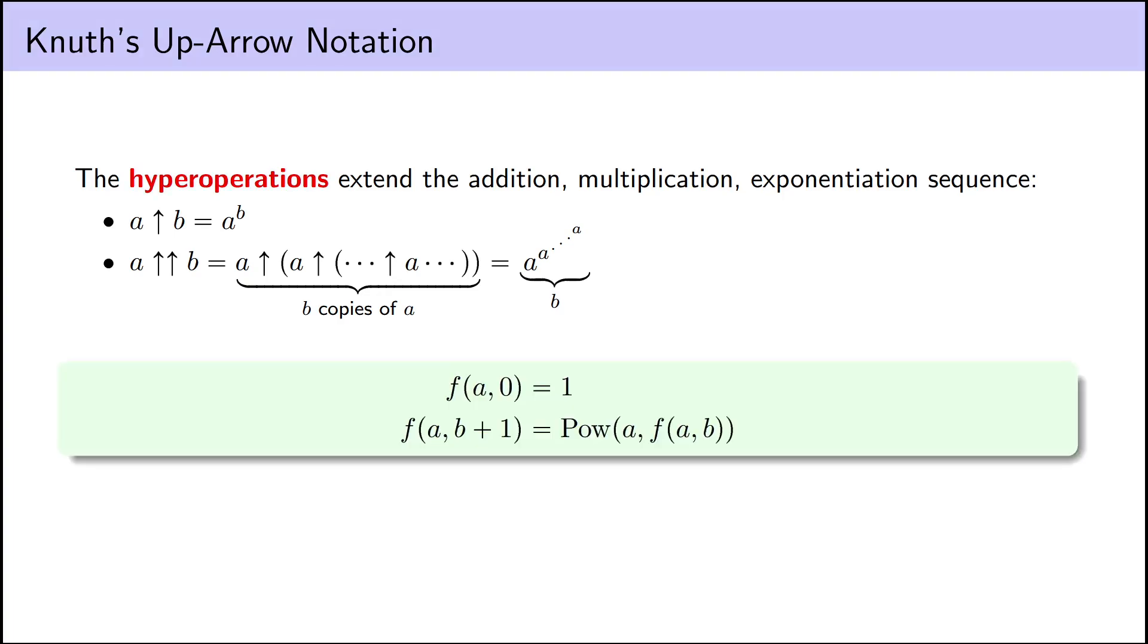This function is very naturally a primitive recursive function. If we let f of a b be a double arrow b, then f satisfies the following recurrence. f of a zero is equal to one, and f of a b plus one equals a to the power of f of a b. And these are exactly the kinds of recurrences that define primitive recursive functions, defining f of b plus one in terms of f of b using functions we've already shown to be primitive recursive. And I showed exponentiation to be primitive recursive in this exact way in the previous video.